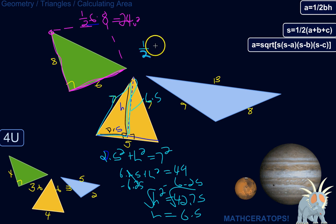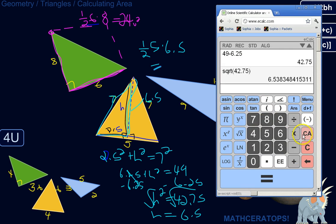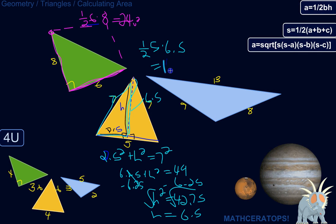Base, 5, times height, which we just found, 6.5, roughly. So 1.5 times 5, times 6.5, 16.25, so about 16.25 units squared for this one.